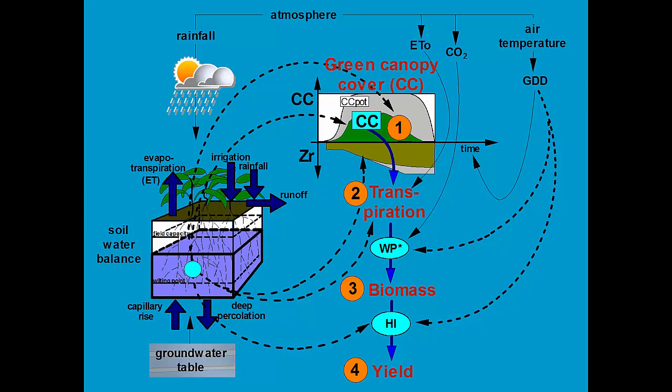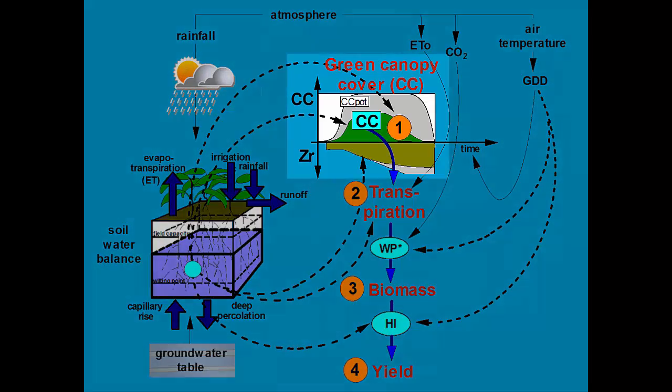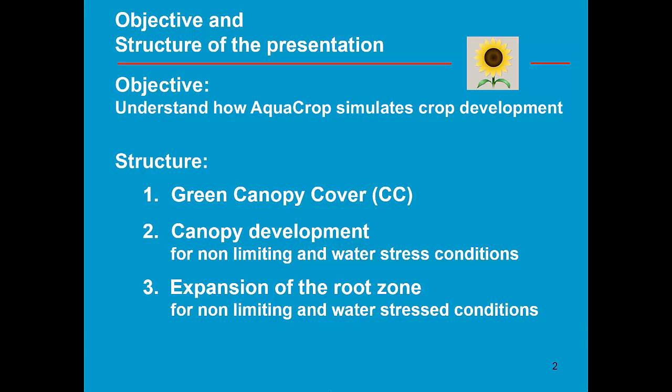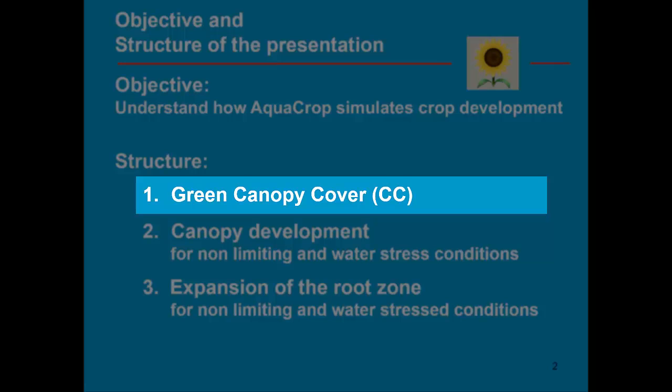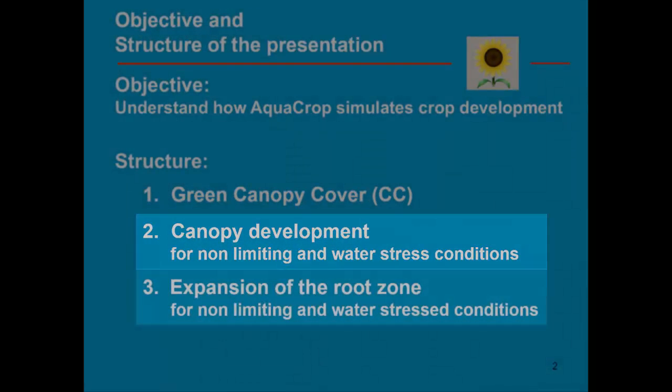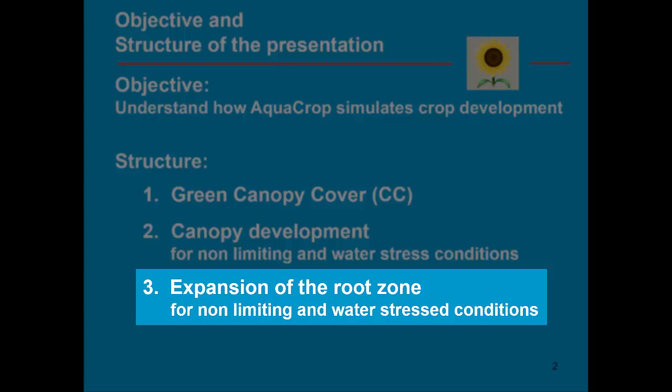In this module we focus on the simulation of green canopy cover. The learning objective is to understand how AquaCrop simulates crop development. We will explain the concept of green canopy cover and subsequently how canopy development and the expansion of the root zone develop under non-limiting and water stress conditions.